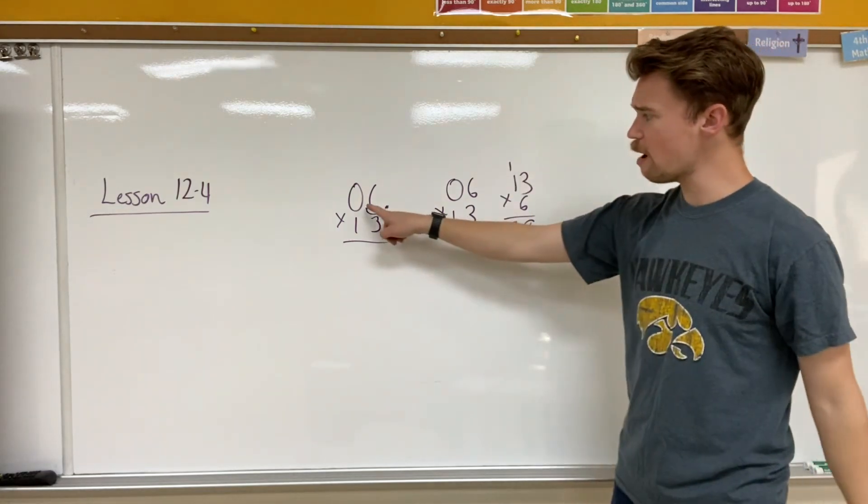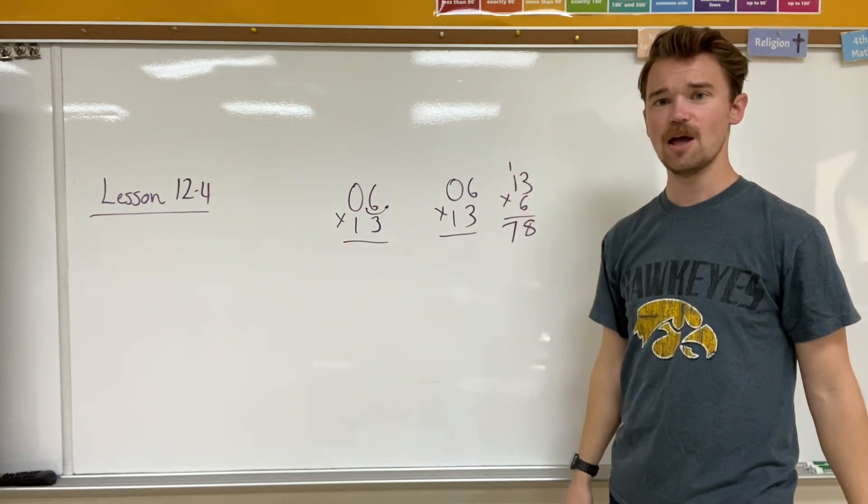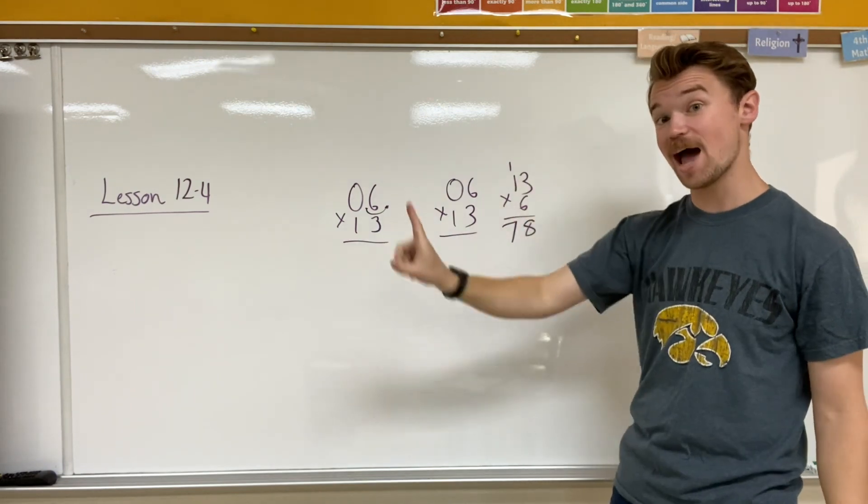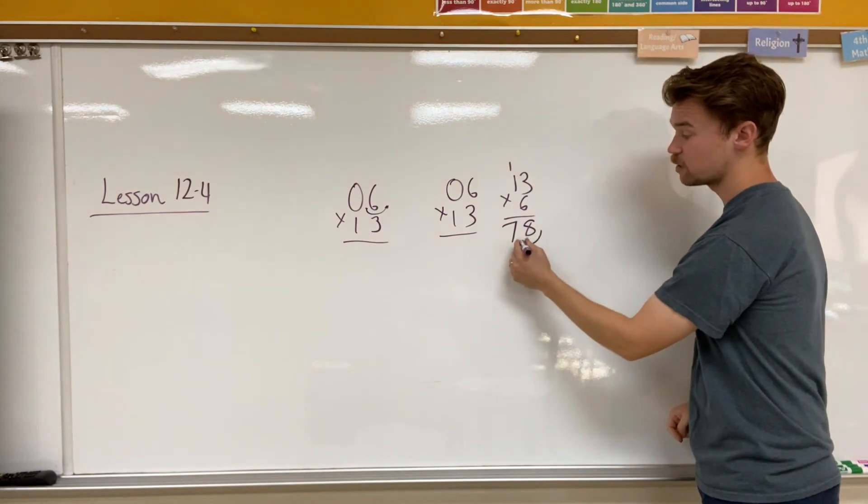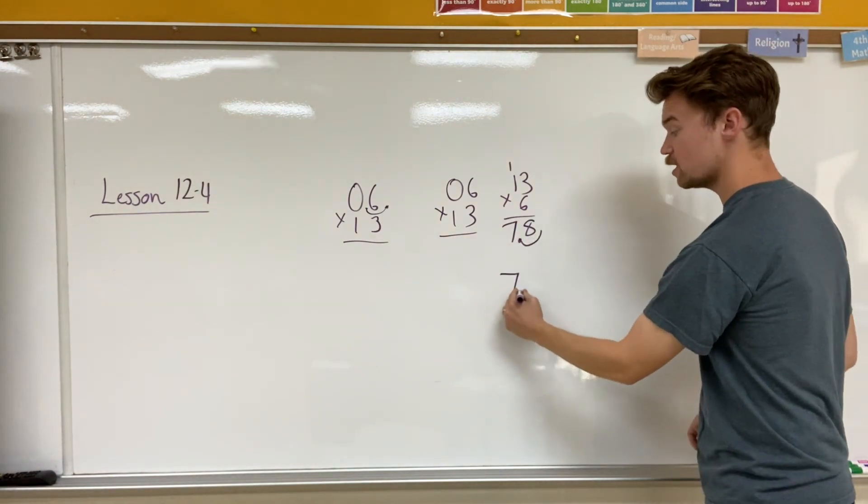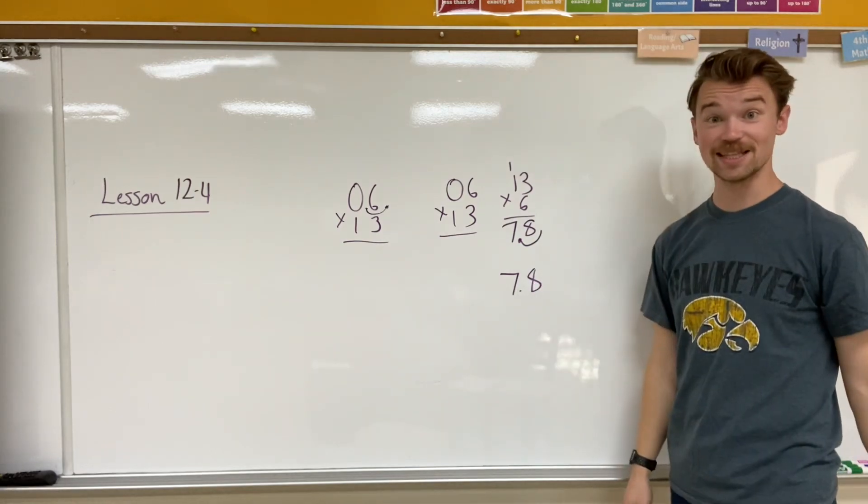Now, do you remember how I moved it over one place to the very end? Well, now I need to move it one place back to where it's supposed to be. So I take my decimal place that's at the end, I move it back to here and my answer is 7 and 8 tenths.